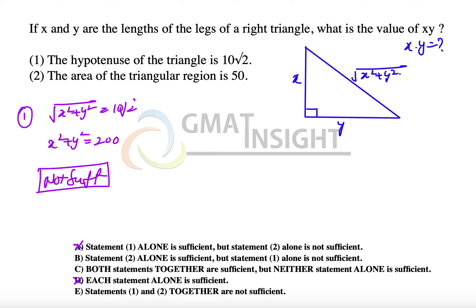The second statement says that the area of the triangular region is 50. The area can be represented as half of base times height, which is (1/2)xy, because the base is y and height is x. This equals 50, so we understand that xy = 100.